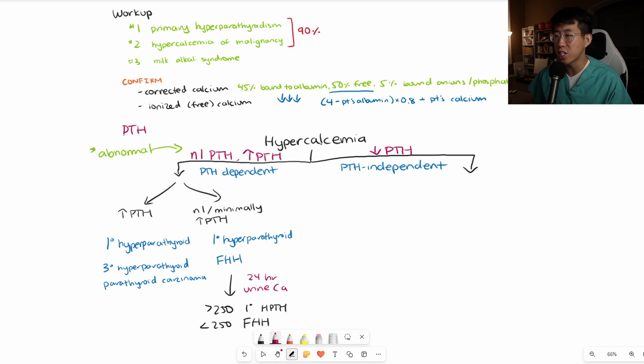Moving on to the PTH-independent side, if you've found that the PTH is adequately suppressed, what labs are you initially going to order? You're going to order PTH-RP, 25-hydroxyvitamin D, and 1,25-hydroxyvitamin D. If PTH-RP is elevated, you have hypercalcemia of malignancy, usually from some kind of PTH-RP-secreting tumor, which is very common in squamous cell cancer and renal cell carcinoma.